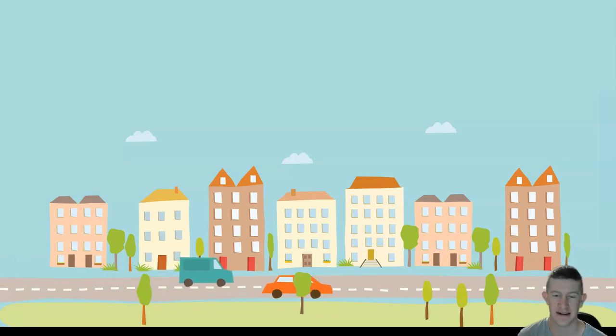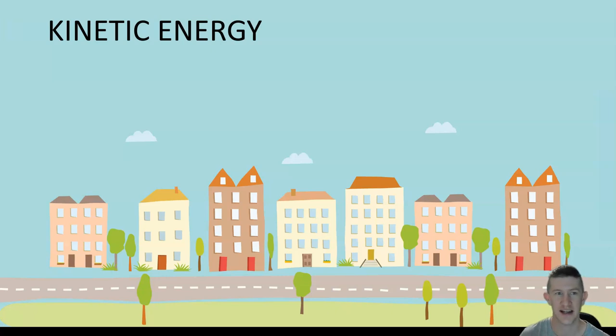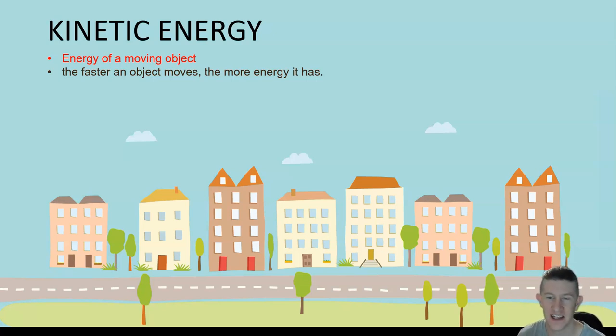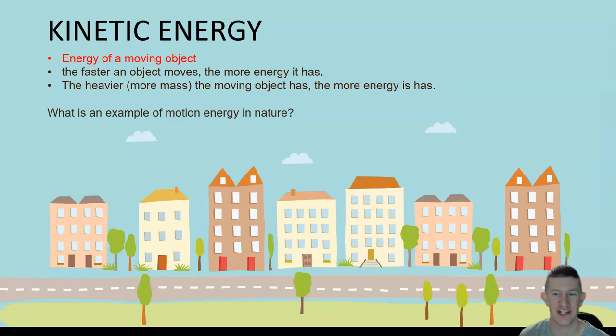Next is kinetic energy, which is all about moving things. Everything that is moving has kinetic energy. The faster it moves, the more energy it has. There's another factor we'll talk about later, which is how much mass the object has. What's an example of motion energy in nature? I'm interested to know what you come up with.